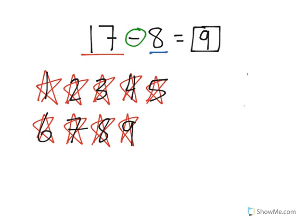17 minus 8 is equal to 9. That's how you solve a basic subtraction problem.